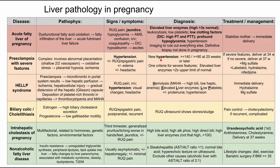There are several criteria for severe features. One criteria is elevated liver enzymes above two times the upper limit of normal — that's the one related to the liver. Other severe features include other signs of end organ damage, such as renal failure, headaches, and eventually seizures when you have full eclampsia. The treatment for preeclampsia with severe features is to deliver at 34 weeks. If there are no severe features, you can deliver at 37 weeks. Moms should get magnesium sulfate to prevent seizures, and blood pressure control with labetalol, hydralazine, and nifedipine.